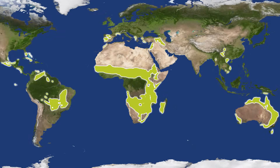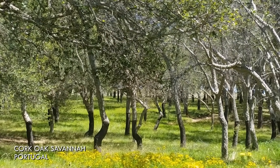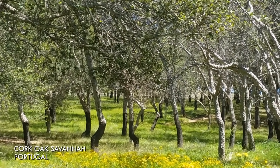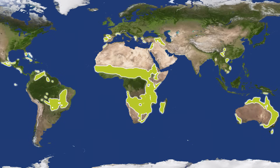So where in the world do we find savannah? Well, if we apply the strict definition of a natural mix of trees, shrubs and grass, then they can occur in temperate and subtropical latitudes, as well as the tropics. But these areas are relatively small compared to the tropical savannah that dominates the tropics, in South America, Australia, and above all, Africa. I'll mention a bit more about these other areas in future episodes, but for now we'll continue our focus on the tropics.